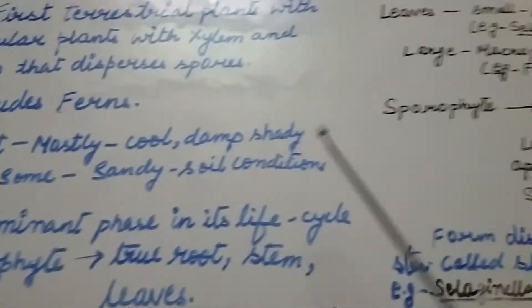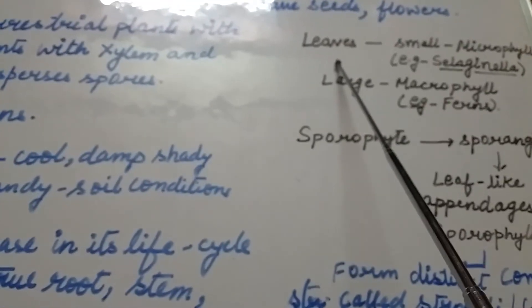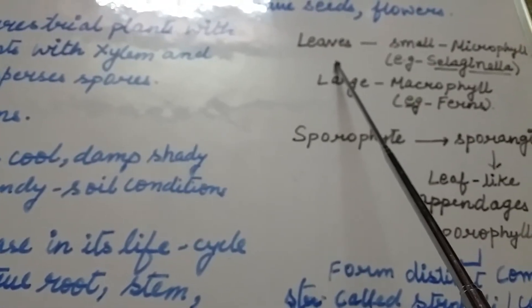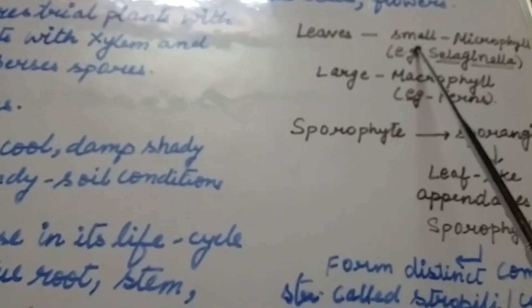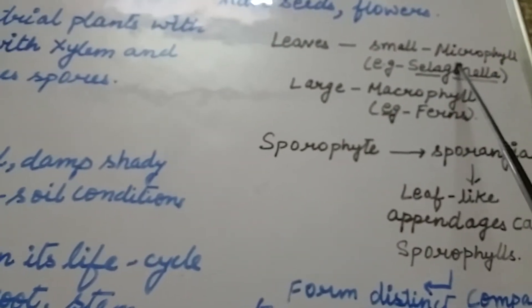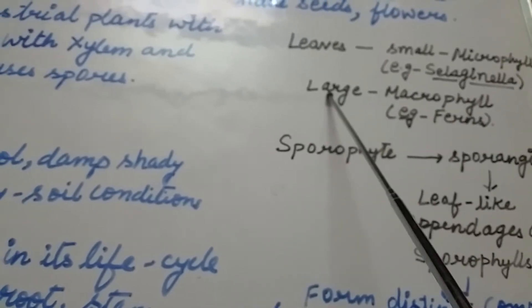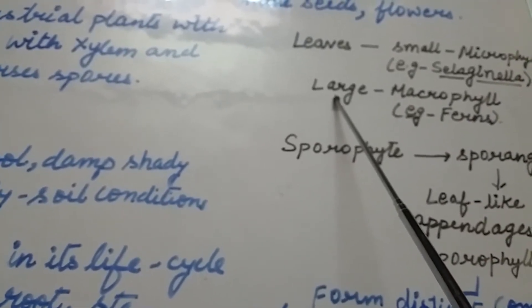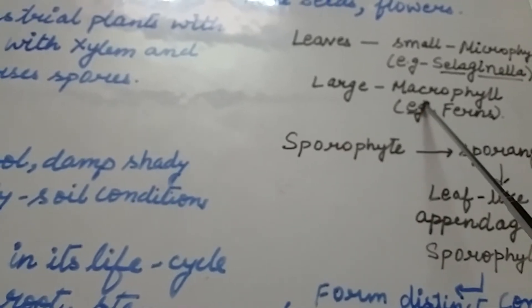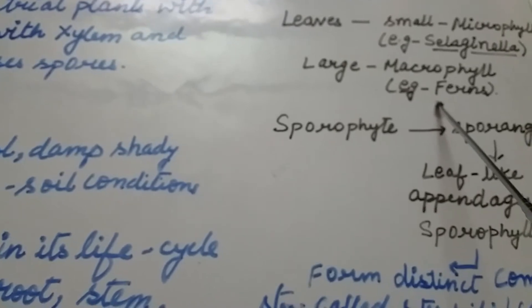Coming to the leaves of Pteridophytes: if the leaves are small, they are called microphylls — for example, in the case of Selaginella. If the leaves are large, those leaves are called macrophylls — for example, in the case of ferns.